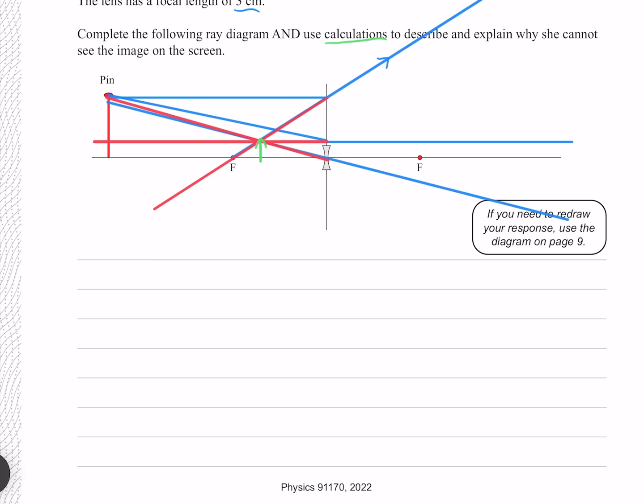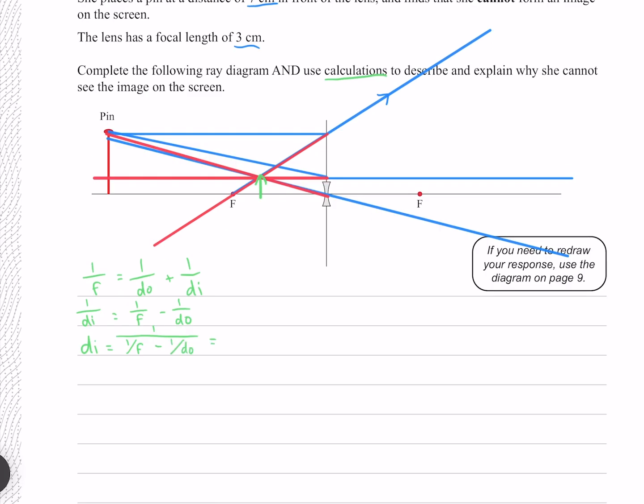So we can start with Descartes' law. Solve for DI by subtracting 1 over DO from both sides and swapping them around. Now taking the inverse of both sides. And putting our numbers in. And because we have a concave lens, our focal length is negative. Which gives me negative 2.1cm.